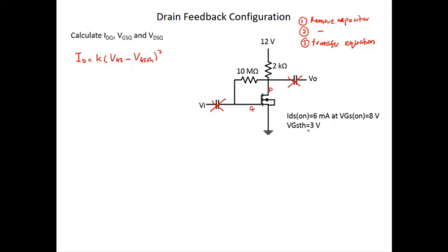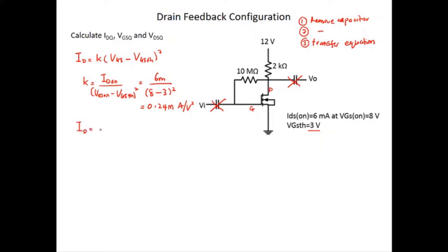The transfer equation is ID = K(VGS − VGS_TH)². VGS_TH is given as 3 V, but K is not directly given, so you need to calculate K from ID_on and VGS_on. The equation for K is ID_on / (VGS_on − VGS_TH)², which is 6 mA / (8 − 3)² = 0.25 mA/V². So you can rewrite: ID = 0.24 mA × (VGS − 3)². This is your first equation.